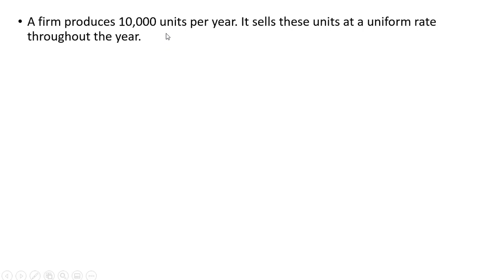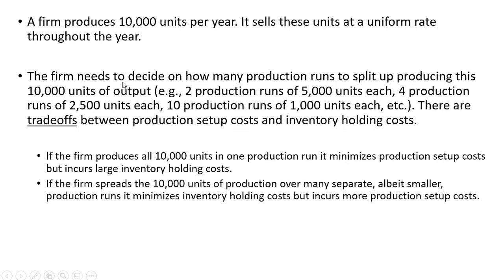A firm produces 10,000 units per year and sells these units at a uniform rate throughout the year. The firm needs to decide how many production runs to use to produce these 10,000 units — for example, two production runs of 5,000 units each, or four production runs of 2,500 units each.